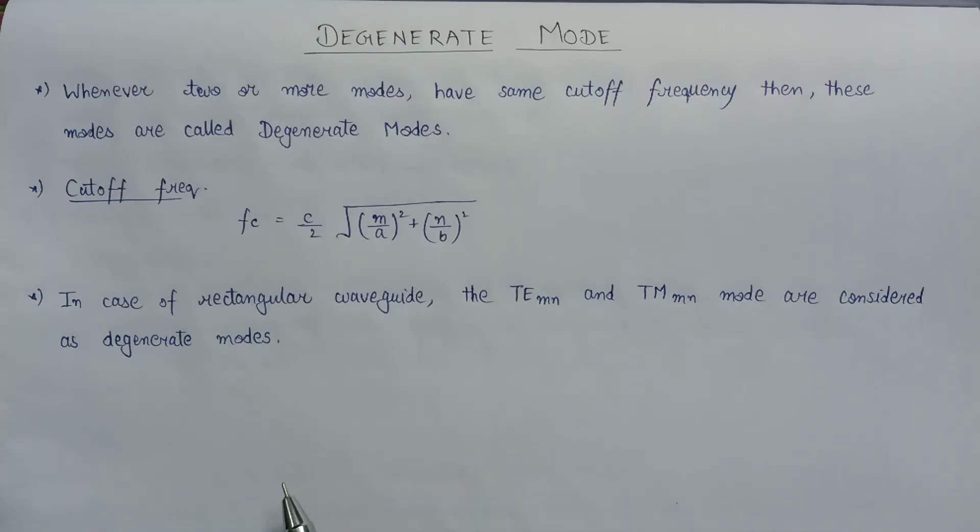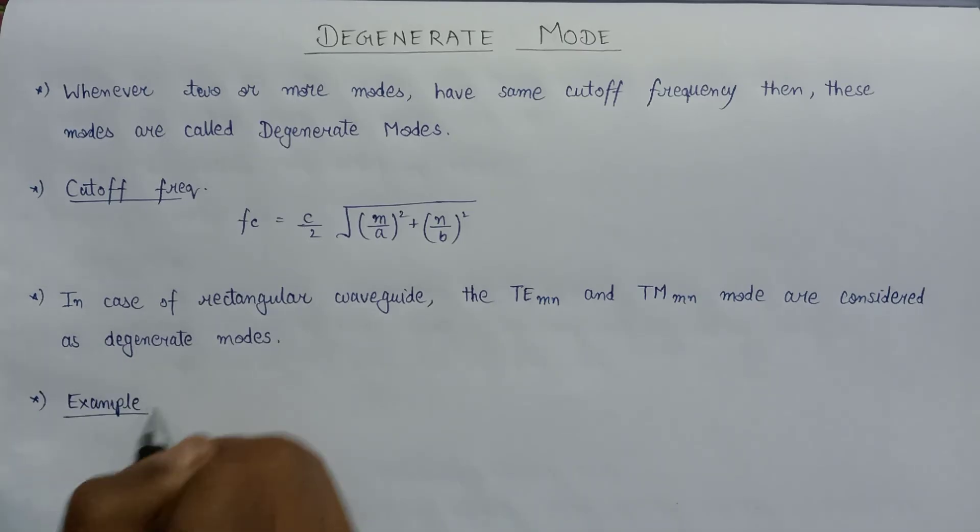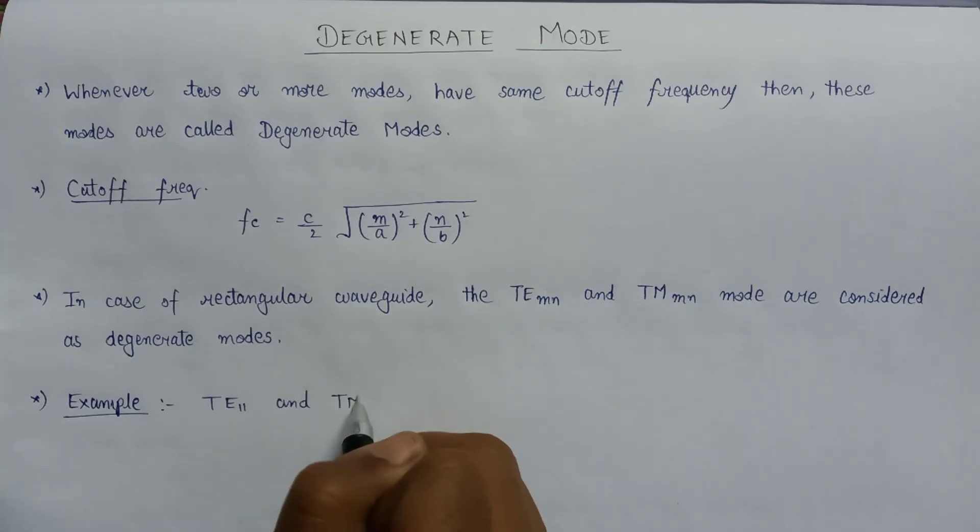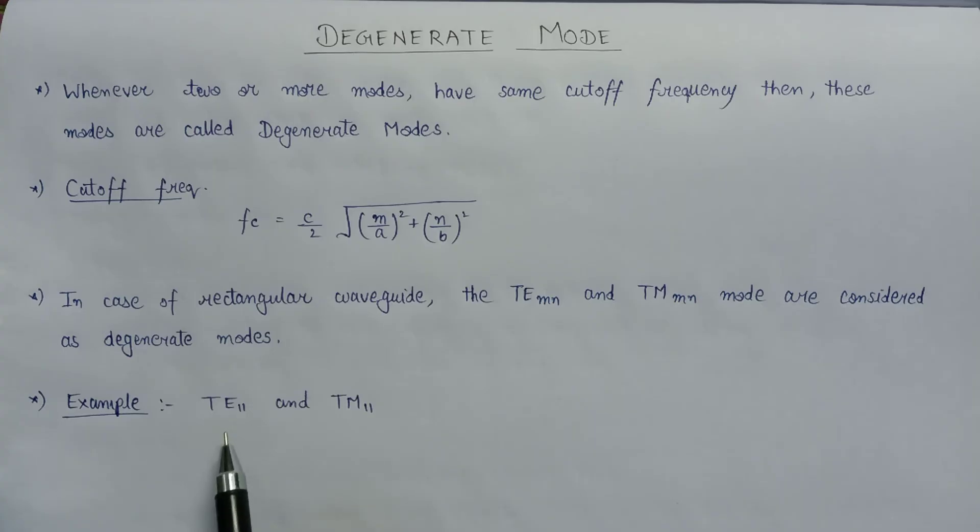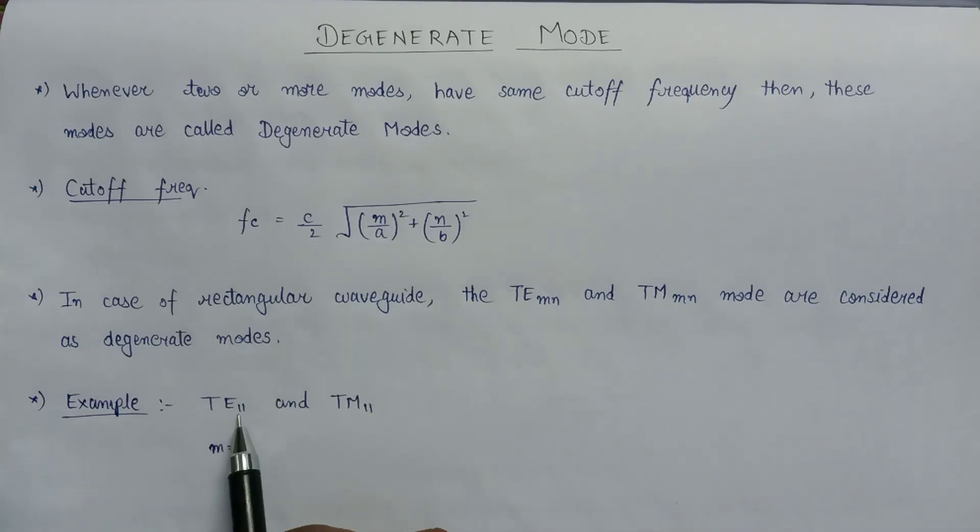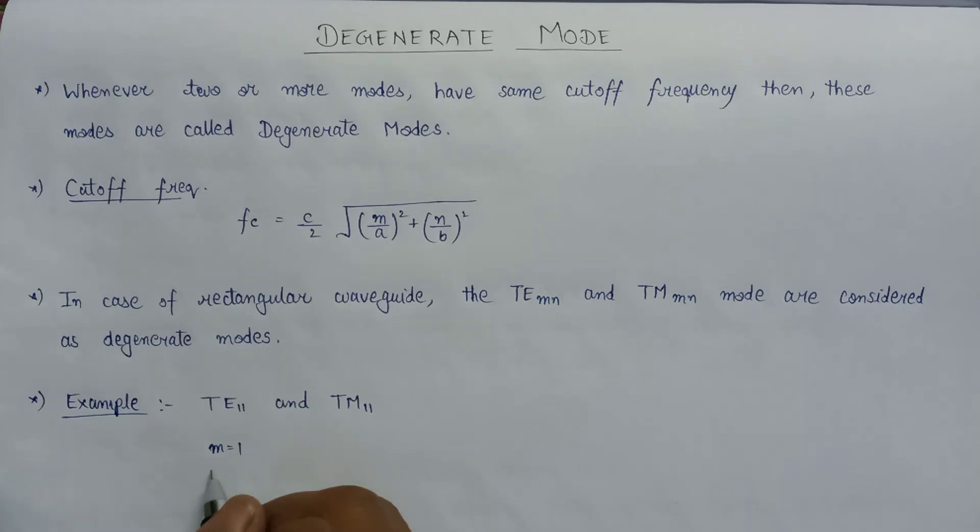Let us discuss this degenerate mode in more detail with the help of an example. Here is an example of TE_11 mode and TM_11 mode. The value of m in this case is equal to 1 because here TE_mn representation is there and in place of m we write 1. In place of n we have written 1, so n value is also 1.